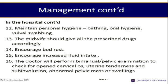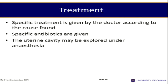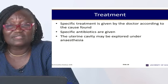Maintain the woman's personal hygiene and render general nursing care. Encourage increased fluid intake to flush the system of toxins. The doctor may perform a bimanual pelvic examination to check for open cervical os, uterine tenderness, or sub-involution and rule out pelvic or abdominal mass. Specific treatment is given depending on the cause. Broad-spectrum antibiotics cover infection pending culture results, after which specific antibiotics are continued. The uterine cavity may be explored under anesthesia to check for retained products.